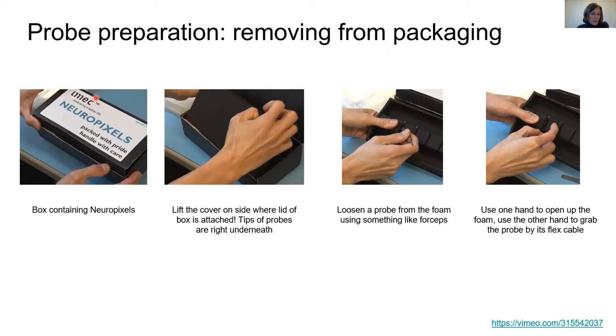You will get your probes in a box like this one. One thing to remember is the tips of your probes are pointing to the lid of this box. So it's very important to open them in the right way, namely like this. You lift the lid of the box like that. The probes are stuck into this foam here. Sometimes they're quite difficult to get out, so you may want to loosen them first, for example with forceps like so. Once you've done this, you can hold with one thumb one part of the foam away and then grab the probe with your other hand by its flex cable. This is a secure way of getting the probe out of the box.